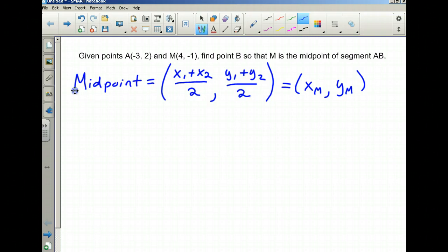In this problem, we have that A(-3, 2) will be our (x₁, y₁), and M is the midpoint, so (4, -1) is the (xₘ, yₘ) in the formula. What we're trying to find is the value of B. What is this coordinate going to be equal to? Let's set this up to solve.